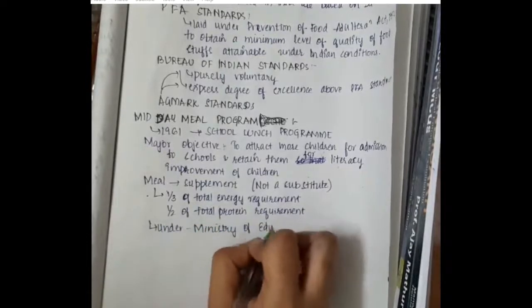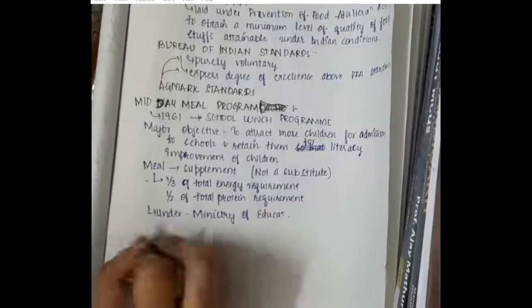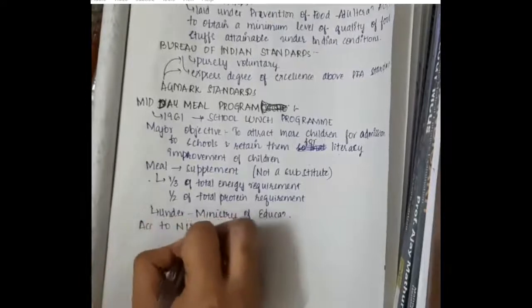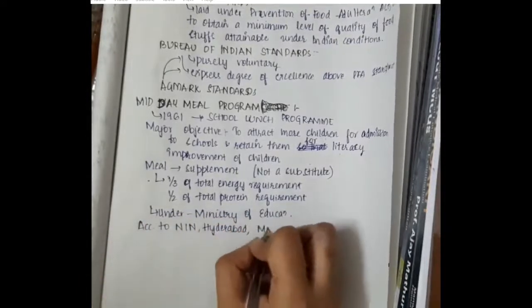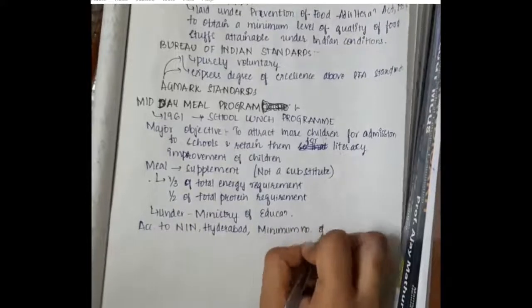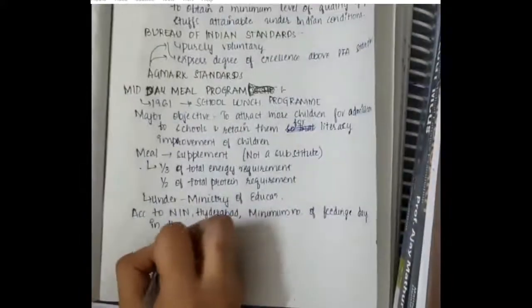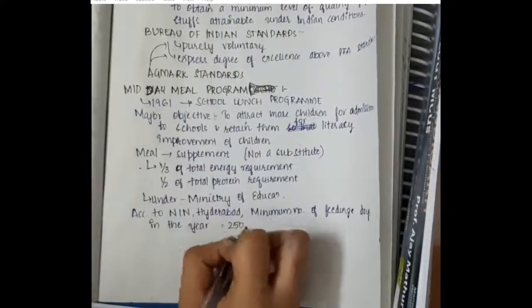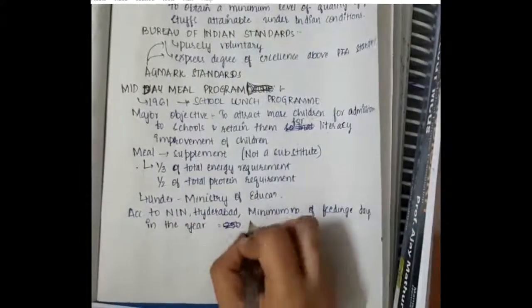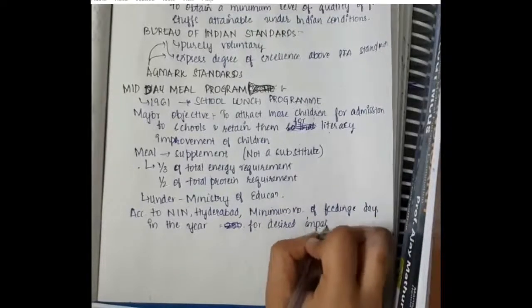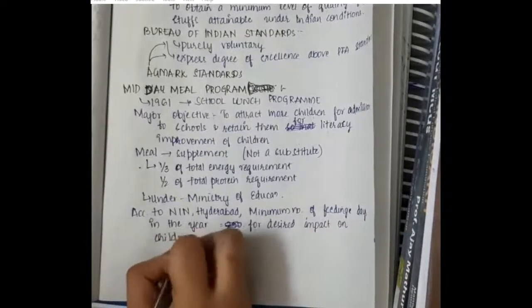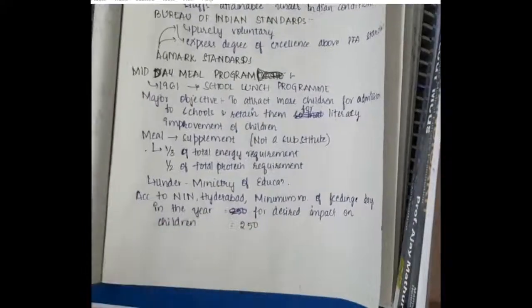This Midday Meal Program is under the Ministry of Education. According to the National Institute of Nutrition, the minimum number of feeding days in a year for desired impact on children is 250 days. All children should be fed at least for 250 days to have good impact on the children's nutritional status.